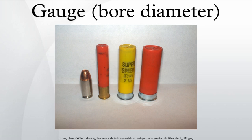The 10-gauge was saved from obsolescence when steel and other non-toxic shot became required for waterfowl hunting, since the larger shell could hold the much larger sizes of low-density steel shot needed to reach the ranges needed for waterfowl hunting. The move to steel shot reduced the use of 16 and 20 gauges for waterfowl hunting, and smaller 2.75-inch 12-gauge shells as well.